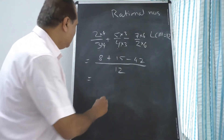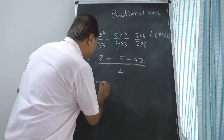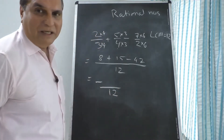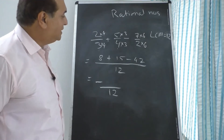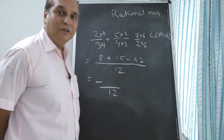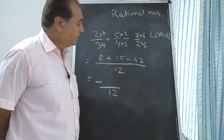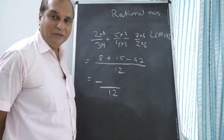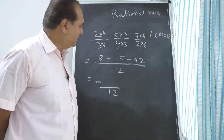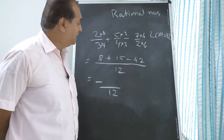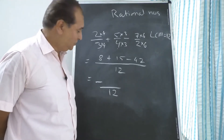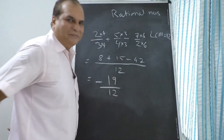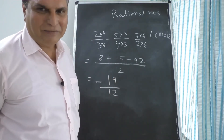The answer will be negative because 23 is a smaller number and 42 is a bigger number. So actually you do 42 minus 23, which is 19. But since it is actually 23 minus 42, the answer is minus 19 upon 12.